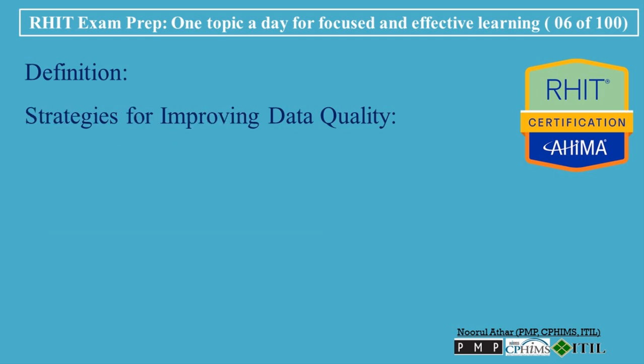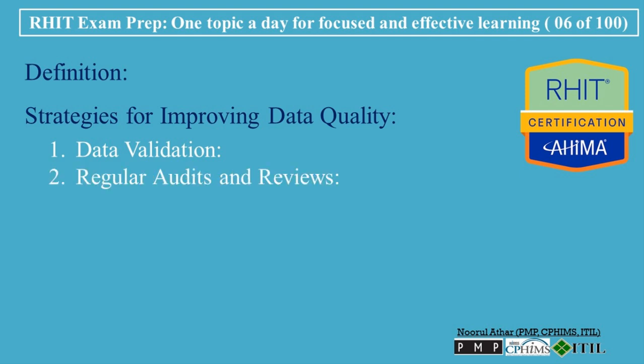Strategies for Improving Data Quality. 1. Data Validation. Implement validation checks during data entry to identify and correct errors early in the process. For example, using drop-down menus for standardized entries can minimize mistakes. 2. Regular Audits and Reviews. Conduct periodic audits of data to assess its quality and identify areas for improvement. Regular reviews help organizations maintain high standards for data integrity.